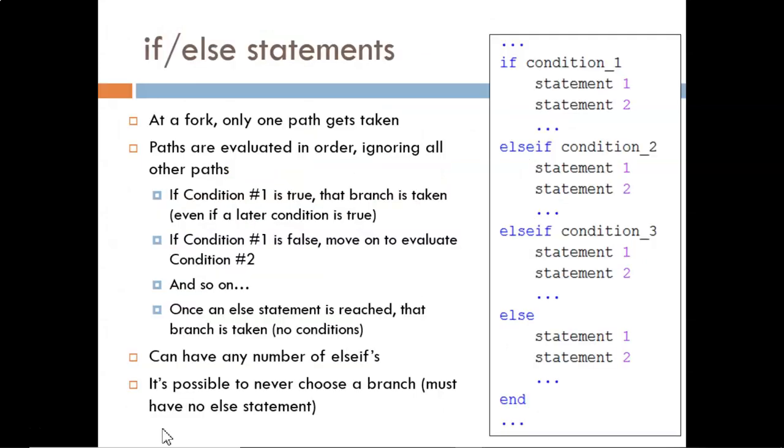The general structure for an if-else branching statement is shown on the right. It must begin with an if and end with an end. In between, there can be any number of else-ifs, including zero. There can also be one else as the last branch, but this is optional. Only one path can be taken. Path, in this sense, means a series of programming steps to take, here indicated by statement one, statement two, and so on. If we happen to choose this branch, only this block of code is executed.